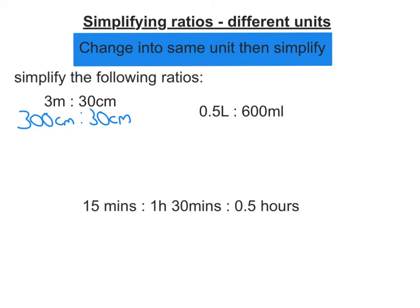Now I've got it like that, I can just do my simplifying. Well, it goes into both and 10 definitely does. So that would be 30 to 3. I can drop the units now because they're in the same units on both sides of the ratio. 3 can now go into 30 and 3, so that would be 10 to 1. That's my ratio for that one.